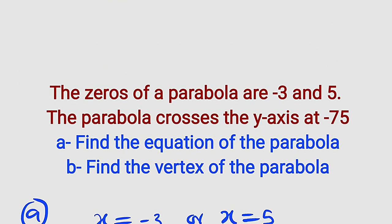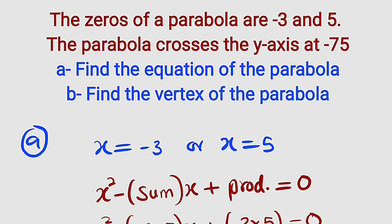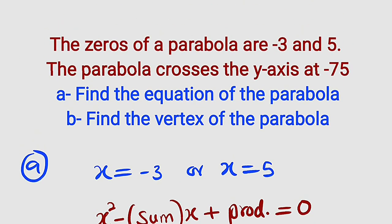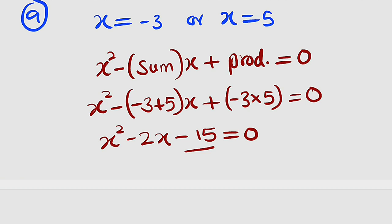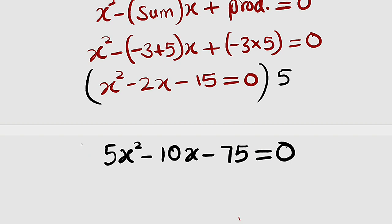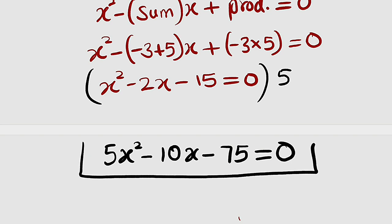But look at the question carefully — it stated that the parabola crosses the y-axis at negative 75. That y-intercept is negative 75, but in our equation we have negative 15 as the y-intercept. Therefore, we have to transform it into negative 75, which we can do by multiplying the entire equation by 5. So: 5x squared minus 10x minus 75 equal to zero. This is the quadratic equation we are looking for.